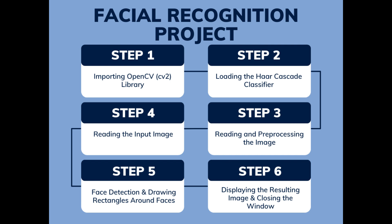Step two is loading the Haar cascade classifier, another important component for image processing and facial recognition. Step three is reading and pre-processing the image. Step four is reading the input image. Step five is face detection and drawing rectangles around faces — we need proof that it's detecting faces successfully, so we'll draw rectangles around them. The last step is displaying the result image and closing the window.